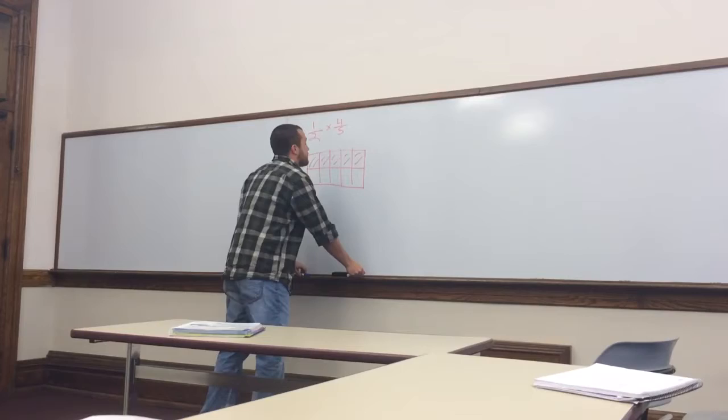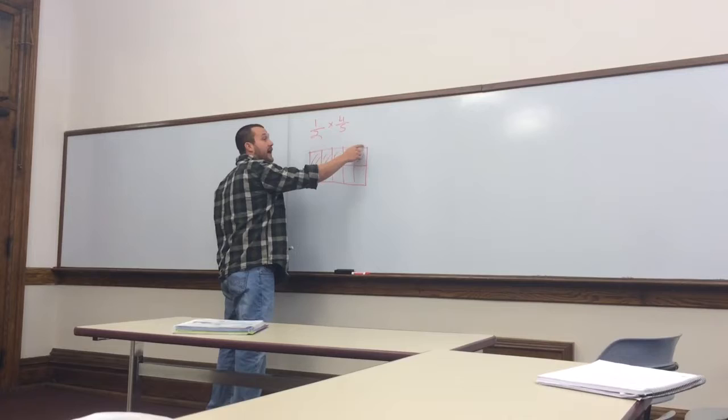We're going to use this blue marker to represent 4 fifths. Okay, notice we have 1, 2, 3, 4, 5 columns here.